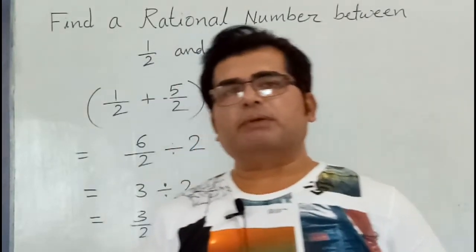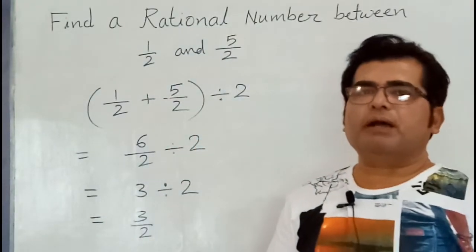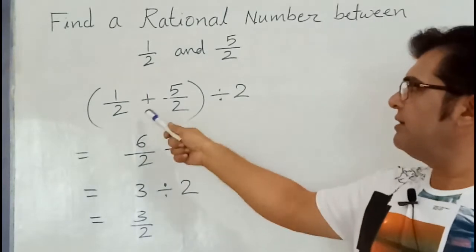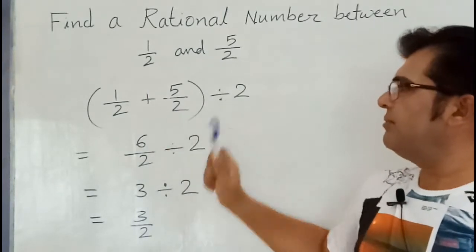1 upon 2 and 5 upon 2. So you add them, then divide by 2.